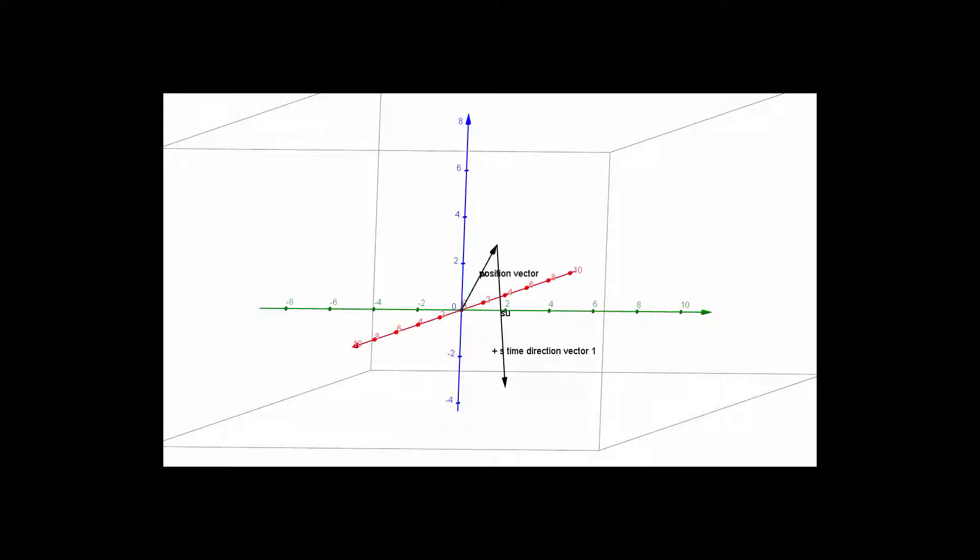Now, we are going to add to that the second direction vector times the scalar T, and there's the result. So it's kind of a mess.